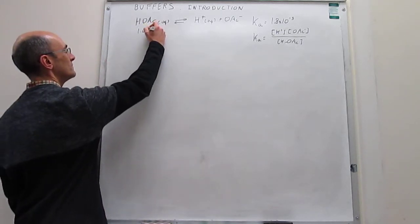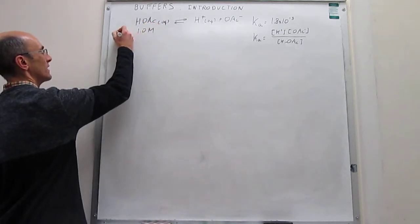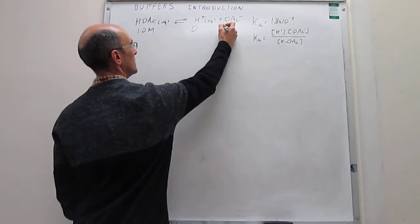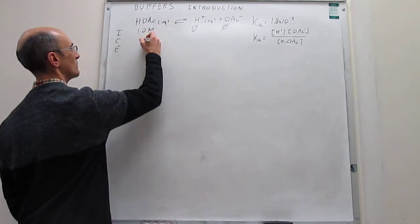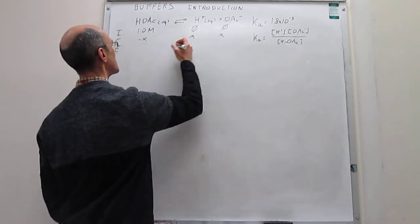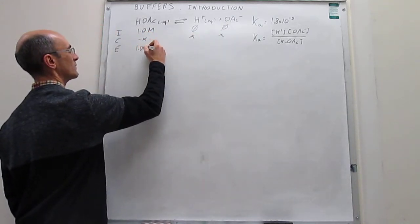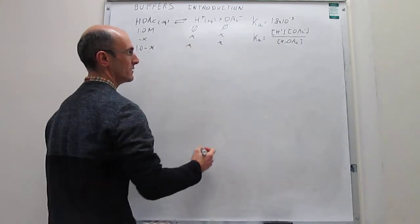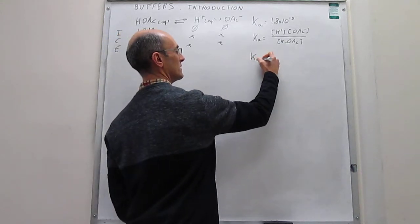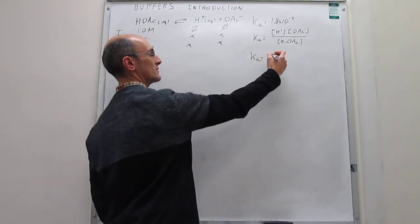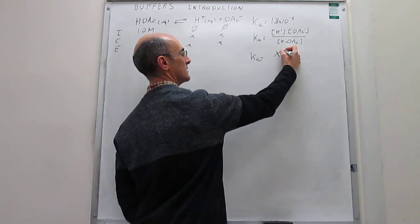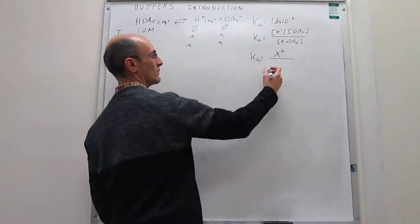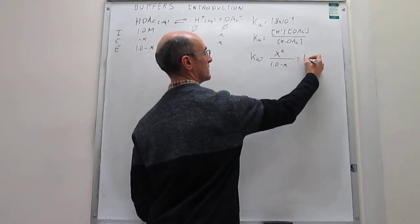We start with 1 molar concentration. In the ICE diagram: the initial concentrations are 1 molar acetic acid, zero protons, and zero acetate. The change will be −x, +x, +x. The concentrations at equilibrium will be 1.0−x for acetic acid, and x for both protons and acetate. The Ka expression becomes x² over (1.0−x).